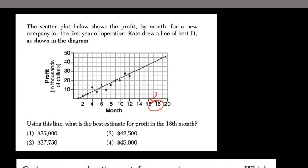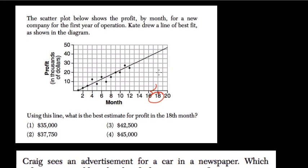Here's the 18th month right here. Let's scroll down. If you look where the month is 18, just look up to the line and see what the profit is at that point, and that's your answer.